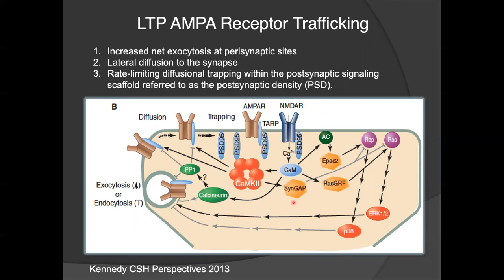RAP and RAS activity is controlled by SYNGAP. SYNGAP is a GTPase-activating protein that will negatively regulate RAP and RAS through that enzymatic activity. Whether it's negatively regulating RAP or RAS more at any given point in time can be controlled by CaMKinase 2. CaMKinase 2 is activated during long-term potentiation, and when that happens it phosphorylates SYNGAP. When that happens, SYNGAP will inhibit RAP more than RAS, and there will be a net increase in exocytosis of AMPA receptors at perisynaptic sites — and that is step one.